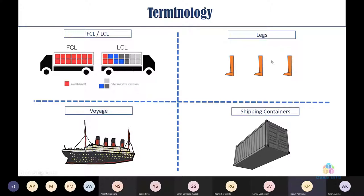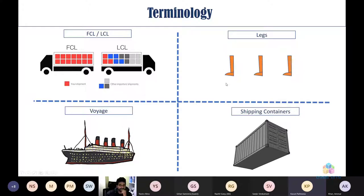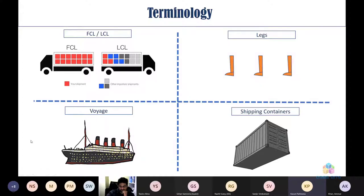A 'leg' represents each step of a journey — for example, from the USA to New Zealand can have multiple legs, each representing transportation, a duty activity, or another step. A 'voyage' is a single vessel traveling along a single journey, which can contain multiple shipping containers and include inbound orders from different legal entities.